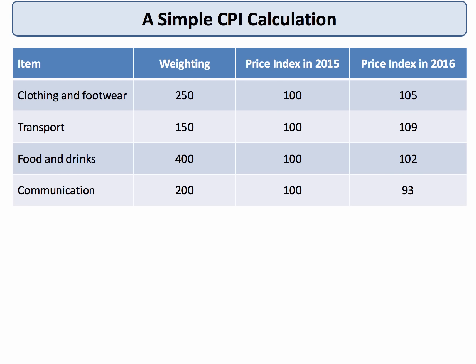Clothing and footwear went up by five percent, transport went up by nine percent, food and drink went up by two percent, but I'm assuming that the cost of communication actually fell by seven percent — in other words there was some deflation in the communication sector. Maybe your mobile phone subscription became a little cheaper in 2016. So how do we calculate a simple CPI?